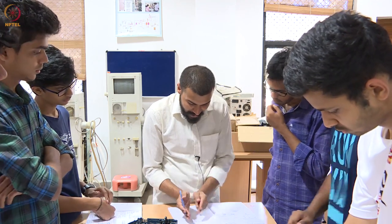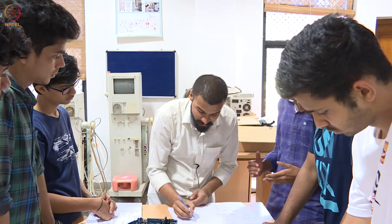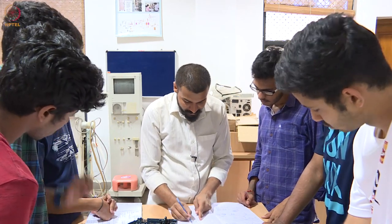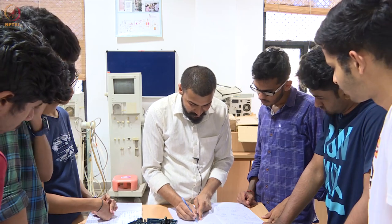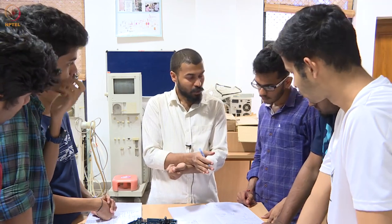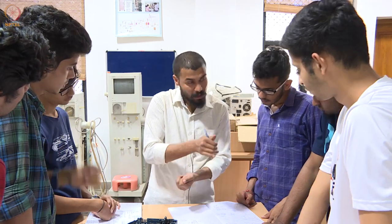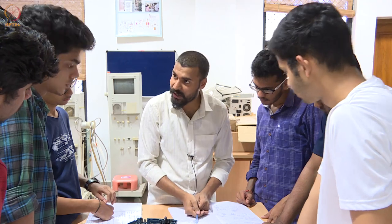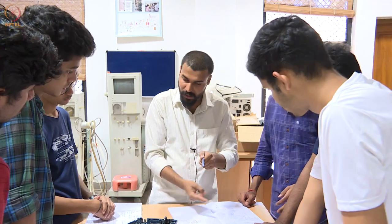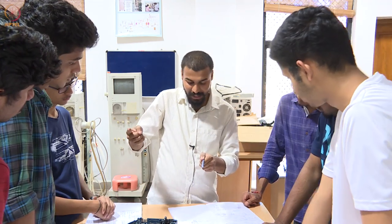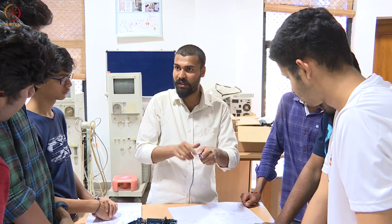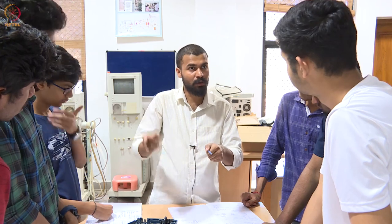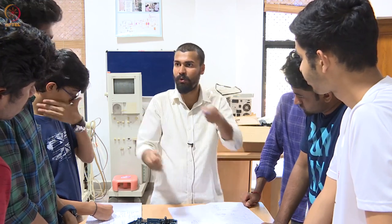Now the coil has twisted. The current direction is reversed, and so the couple is also reversed — initially it was in one direction, now it is in the opposite direction. So I cannot have a continuous rotary motion; it will have some sort of a reciprocatory motion. In order to have continuous rotation, I need to change the polarity of the current-carrying coil when it is moving in theta greater than 90 degrees.